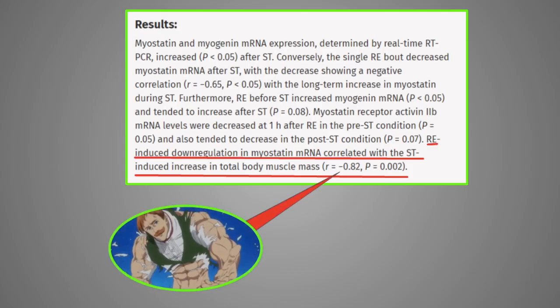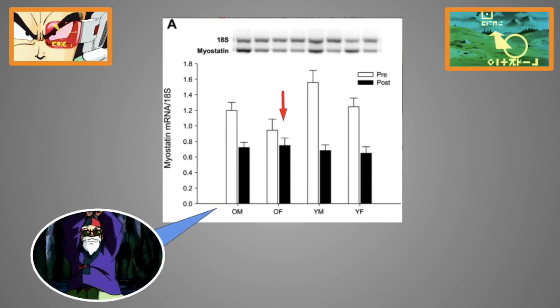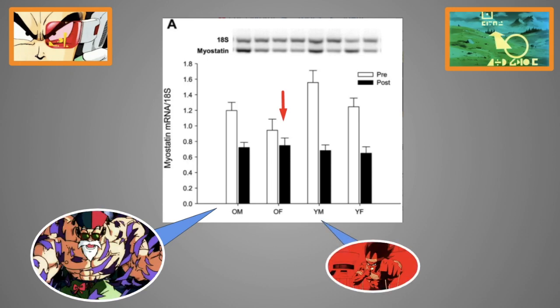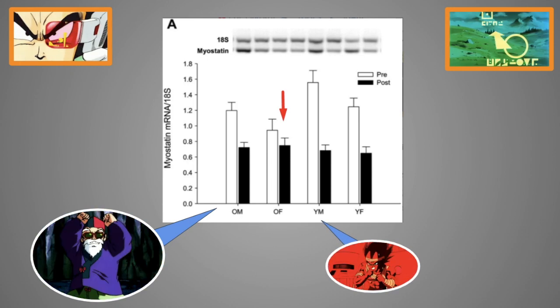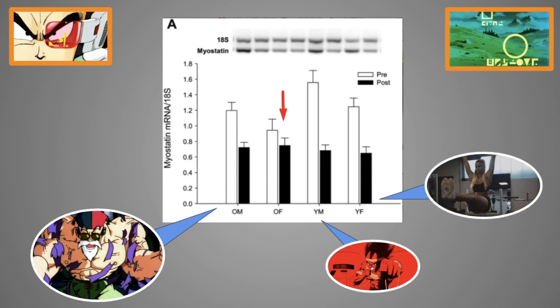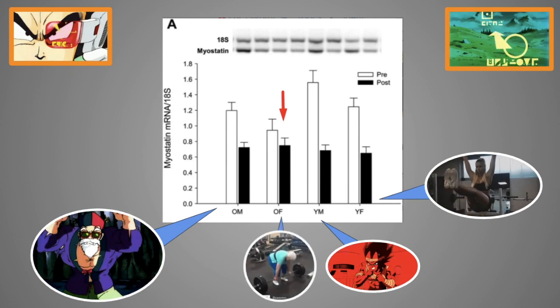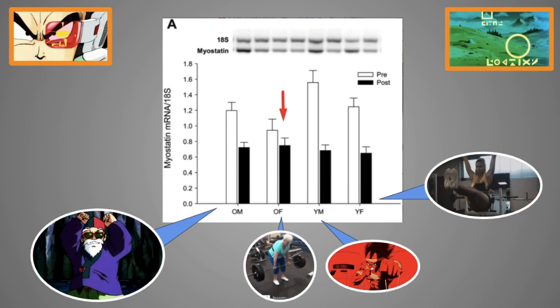Another study here shows the same thing. People that reduce myostatin the most after each workout session are the ones that put on the most muscle. And this study here explains the reason why old women, why it's very, very hard to put on muscle if you're an old woman. Mainly because as you can see, when an old person trains, they're able to lower myostatin significantly. When a young person trains, obviously they have the biggest reduction in myostatin, which is why young people put on muscle so fast. And even young women also lower myostatin to a significant extent. But when it comes to old women, it is very hard for them to lower myostatin from training.